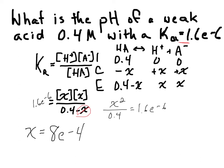And remember, X is really describing the concentration of hydrogen ions. So if we want to solve for pH, we need to do the negative log of the concentration of hydrogen ions. And if I take the negative log of 8e to the negative 4th, that is going to give me a pH of 3.1.